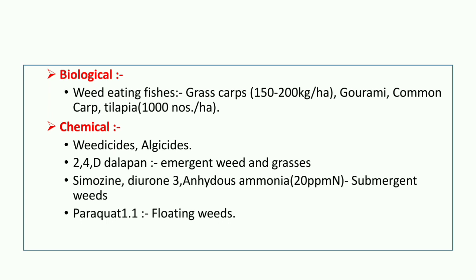In the chemical method, algaecides and 2,4-D are used for emergent weeds and grasses. For submerged weeds, Simazine, Diuron, or anhydrous ammonia at 20 ppm are applied. For floating weeds, Paraquat at 1:1 concentration is used.